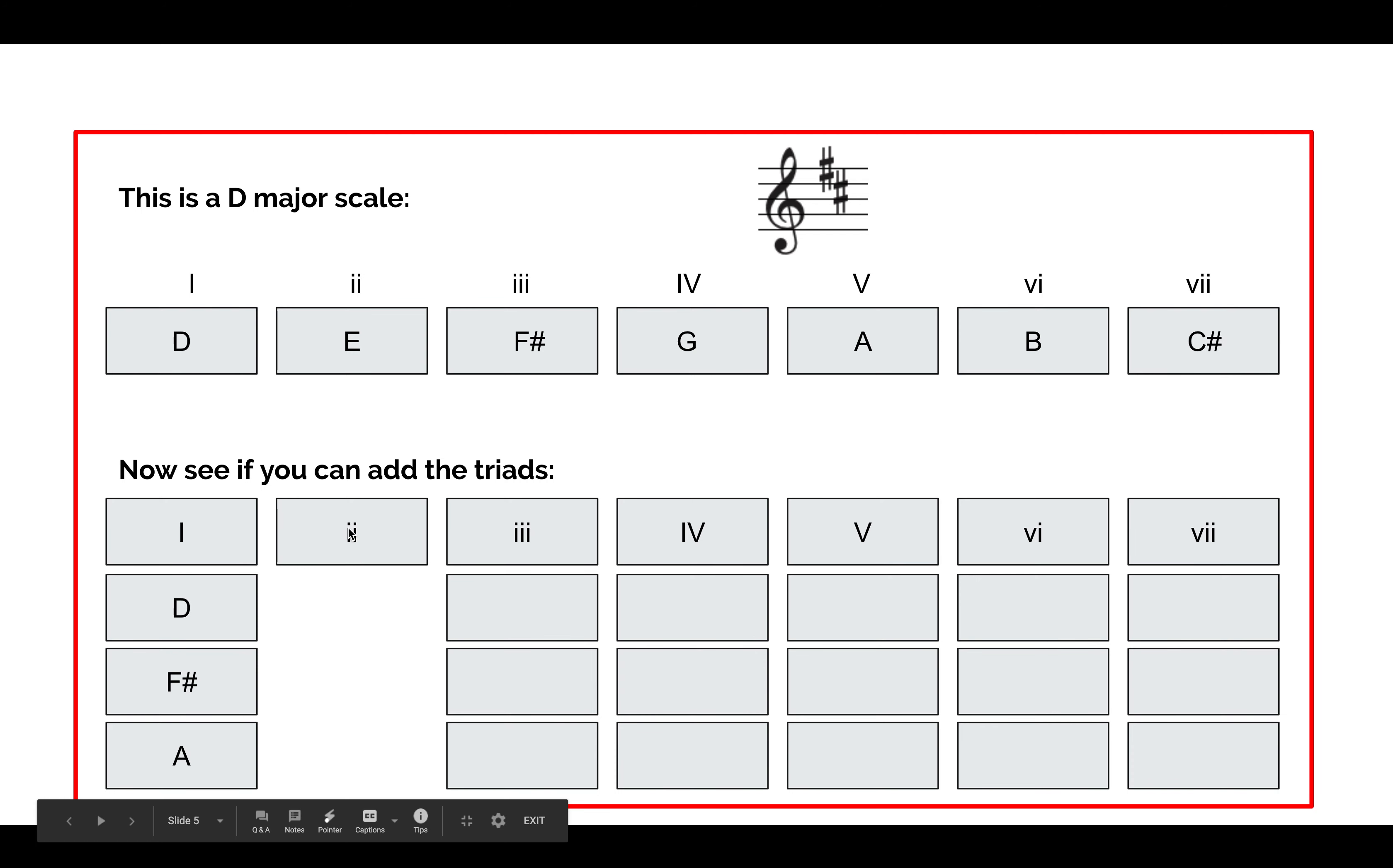Our second chord, or second triad, is going to be starting on note two, which you can see is an E here. We follow exactly the same principle. We play, we skip, we play, we skip, we play. So our second chord is going to be E, G, and B.